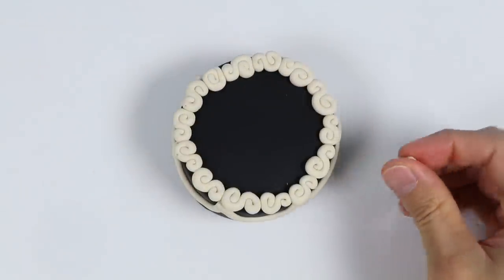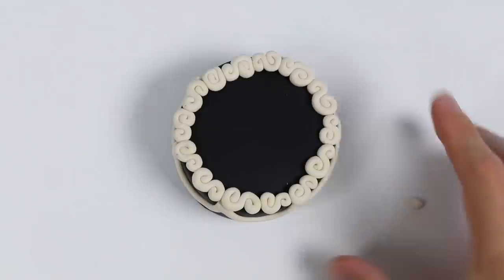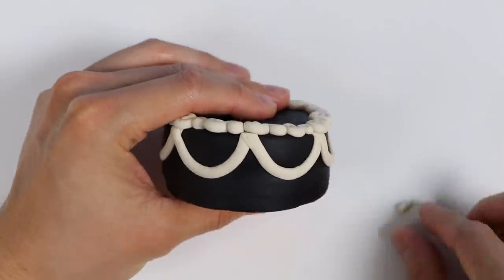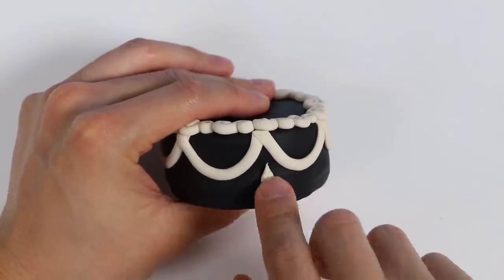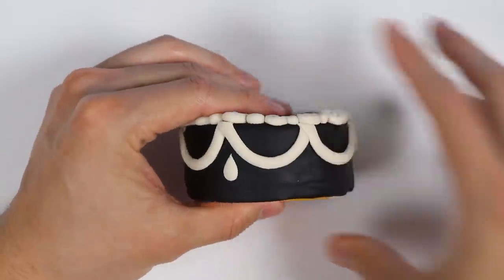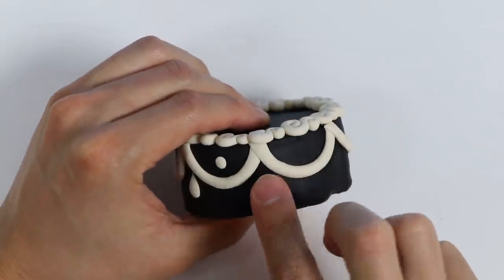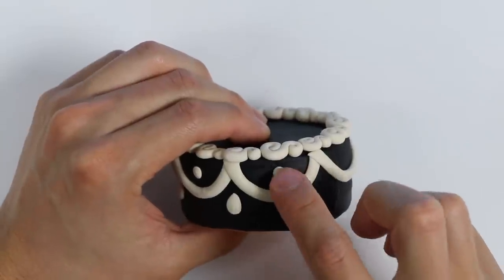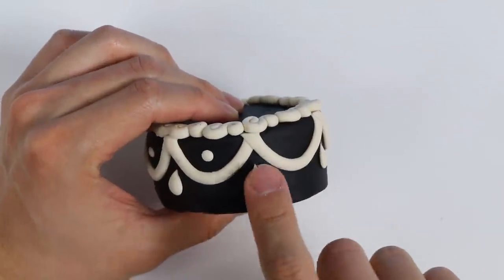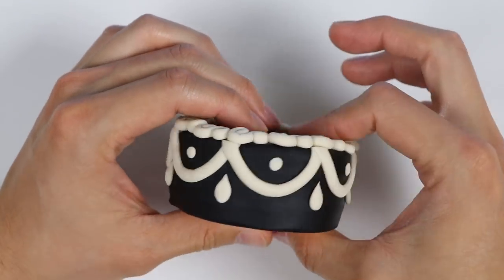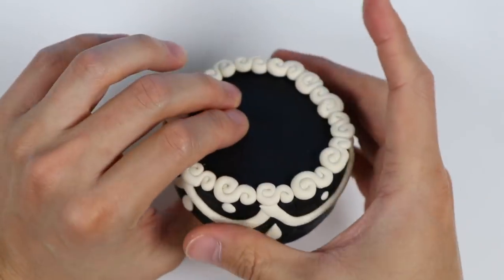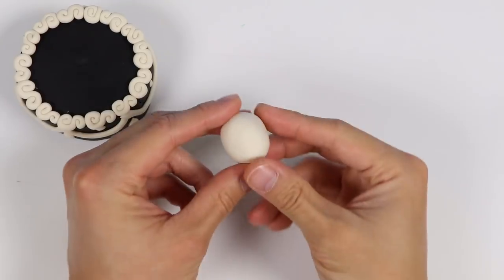Now let's add little white chocolate drops on the side of the cake. Give me a minute. There we go. All right.